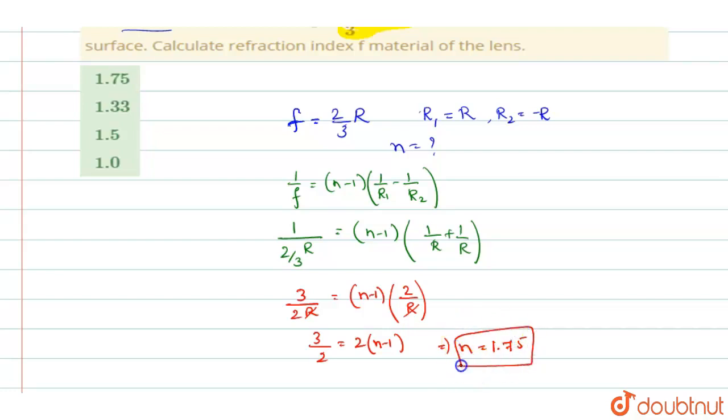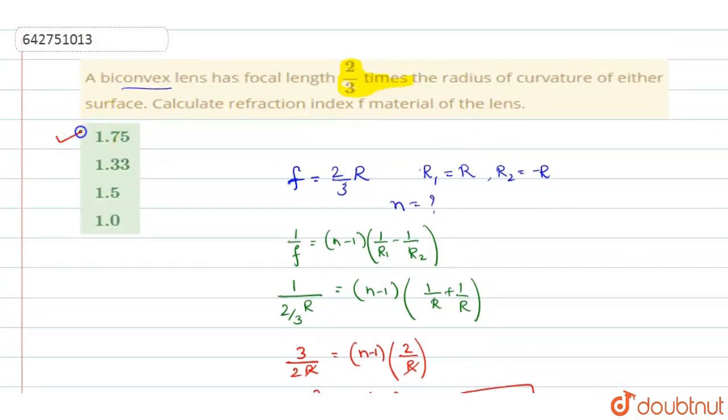So the refractive index of the material you get it as 1.75, the refractive index of the lens is 1.75, option A will be the right answer.